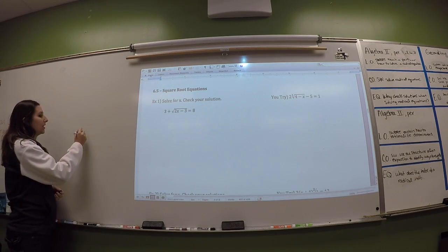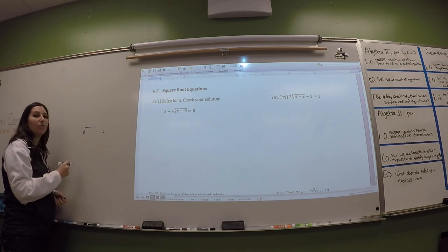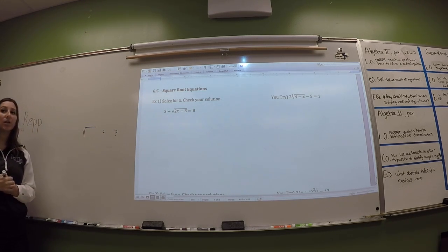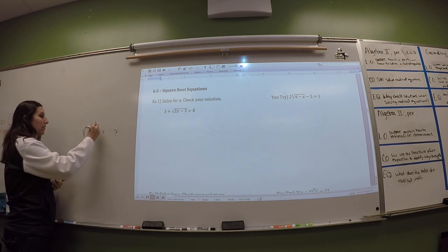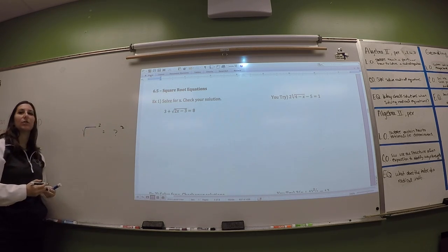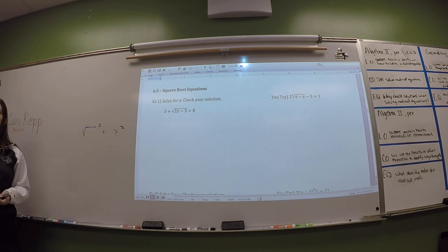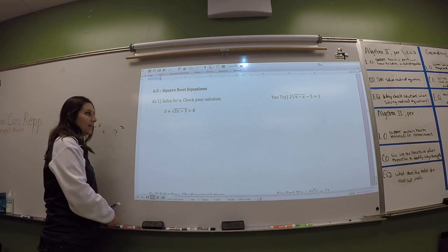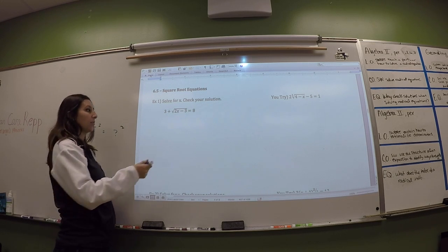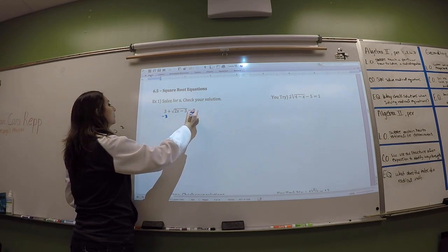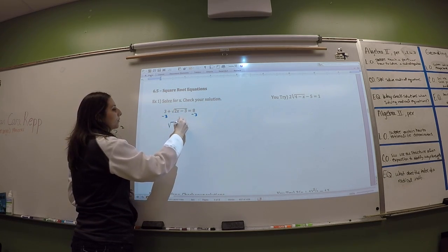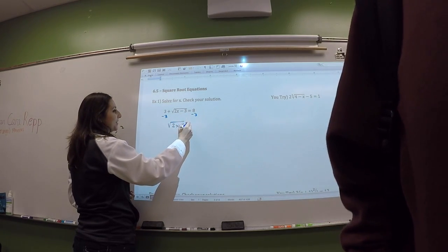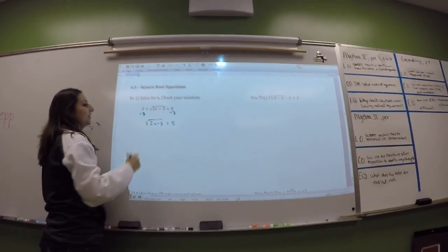Basically what we want to do is we need the square root to be by itself. It's going to be equal to something. And then we're going to undo the square root with a square. Because those are opposite operations. So that's our objective. Here we have 3 plus the square root. The square root is not by itself, so we're going to get it by itself by subtracting 3. So I get the square root of 2x minus 3 equals 5.